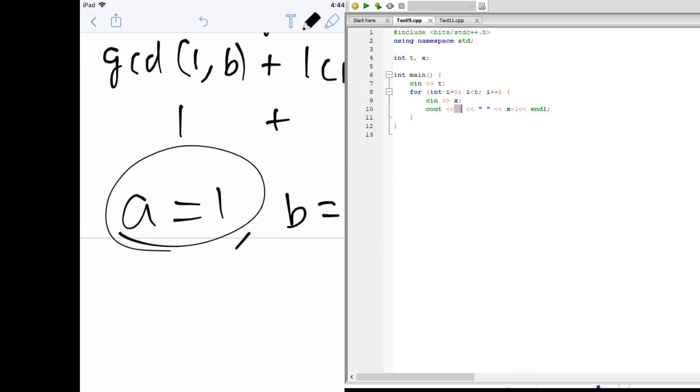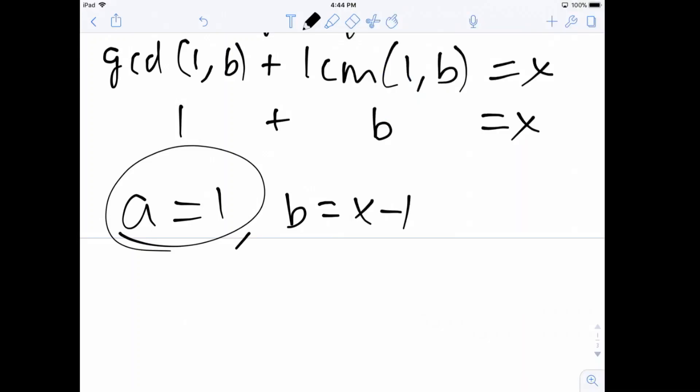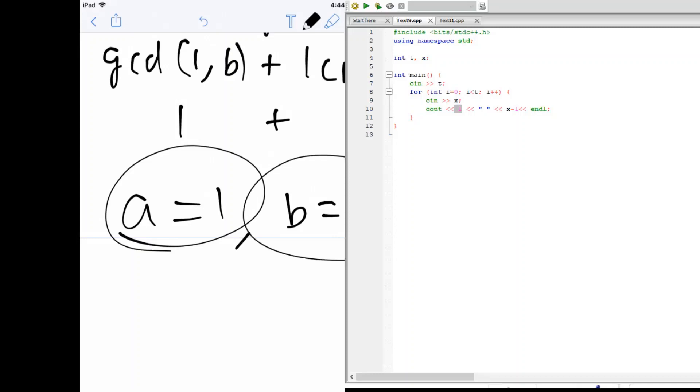B equals x minus one, as we can see from here. So the second value we print is x minus one. And that's it, that's the end of the code for problem A.